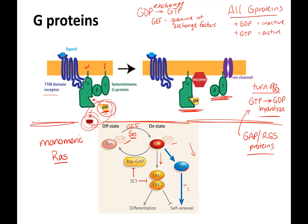Something important when you're looking at these pathways: if you see a little T-bar, that means the pathway or the protein is blocked or inhibited. So SC1 blocks the RAS GAP, and remember GAP is the one that helps hydrolyze GTP to GDP. If SC1 blocks this, then RAS will be on all the time because you're blocking that inactivation pathway. These are the types of things I want you to be able to do when you see pathways.